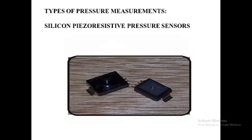The types of pressure measurement. The diagram here indicates the silicon piezoresistive pressure sensor. Pressure sensors can be classified in terms of the pressure ranges they measure, the temperature ranges of operation, and most importantly the type of pressure they measure. In terms of pressure type, pressure sensors can be divided into five categories.